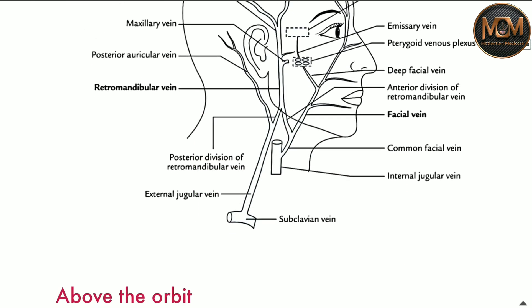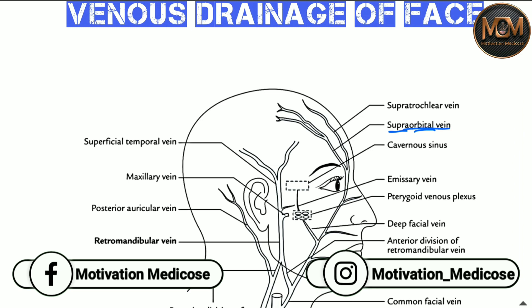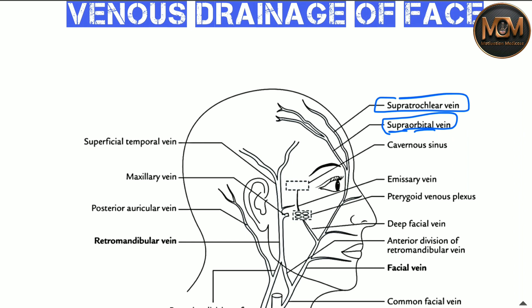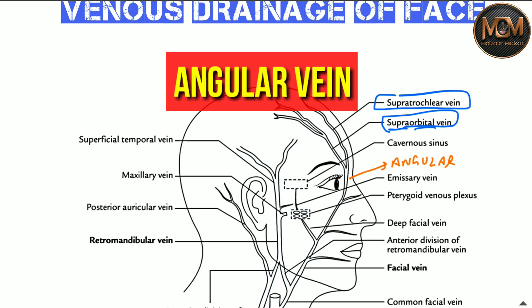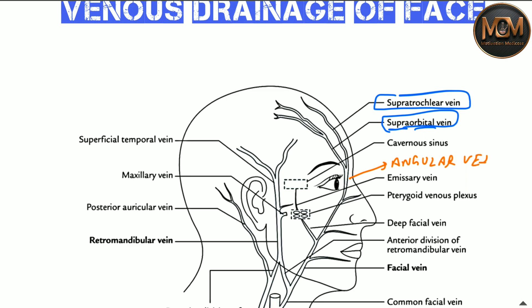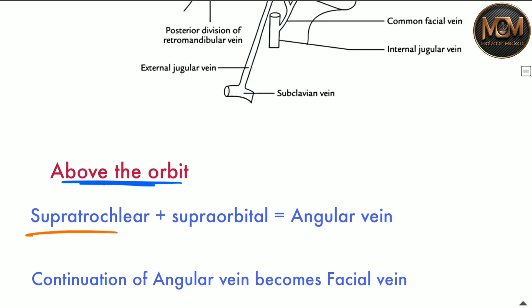First of all, let's see the veins which are present above the orbit. The vein above the orbit is the supraorbital vein — 'supra' meaning above and 'orbital' for orbit. We also have the supratrochlear vein. These two veins, the supratrochlear and supraorbital, will join together to form the angular vein.